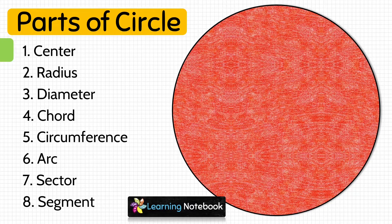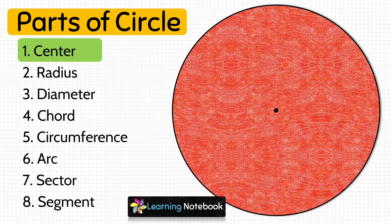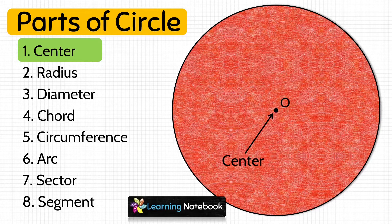Let's first start with the center. The middle point of the circle is called the center of the circle. Let's take the black marker pen and mark the center of the circle as point O.